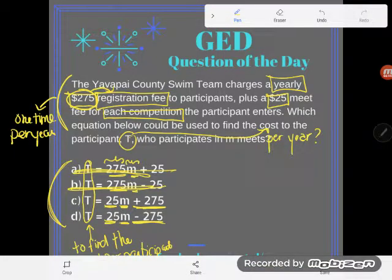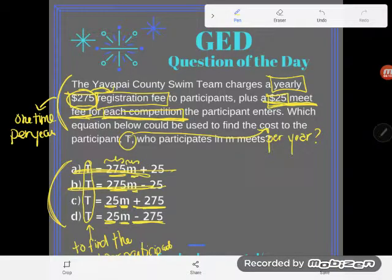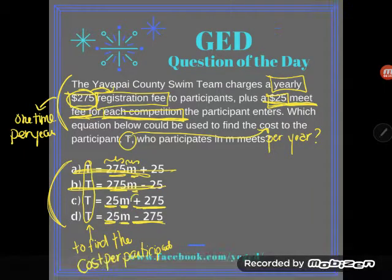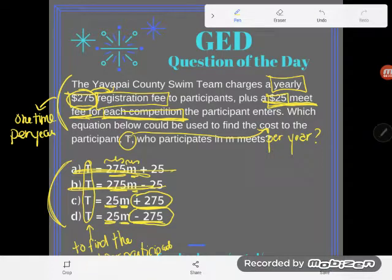That makes a lot of sense because the problem said we're going to pay a $25 meet fee for each competition, for each meet. That means I'm going to pay that $25 over and over again — M times, the number of meets I'm in. So definitely C and D look good with that $25M. The only thing left to figure out is whether the $275 should be added to or subtracted from the meet fees.